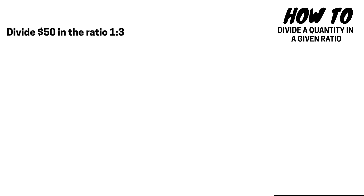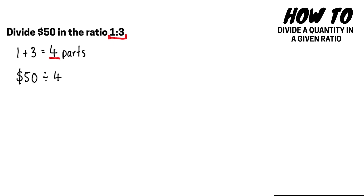In this question we're going to divide 50 dollars in the ratio of 1 to 3. The first thing we have to do is add the parts of the ratio together. Our ratio is 1 to 3, so 1 plus 3 gives us 4 parts in total. Our next step is to divide the quantity — 50 dollars — by the number of parts, so we take 50 dollars divided by 4, which gives us 12 dollars 50.